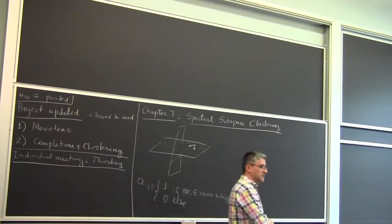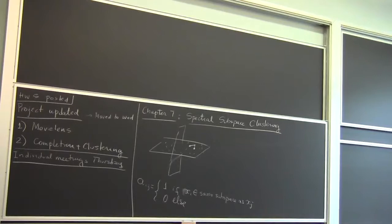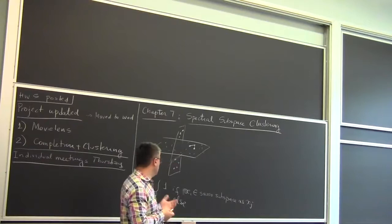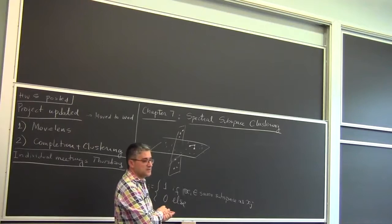The question is how do we go about connecting pairs of points to define an affinity? The issue is that we don't know the subspaces, so a priori there is no way to tell whether two points are in the same group or not.